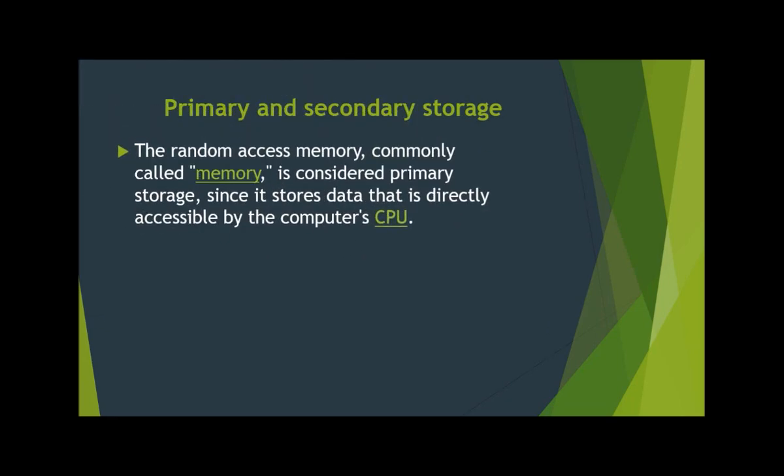Random access memory is a high-speed storage medium that can be accessed with minimal delay. Because the RAM is connected directly to the CPU via the memory bus, the CPU can access data stored in RAM very quickly. For this reason, RAM is used to store data loaded by active programs in the operating system.